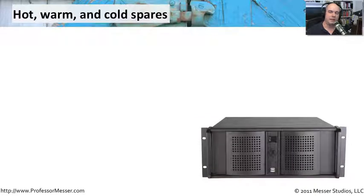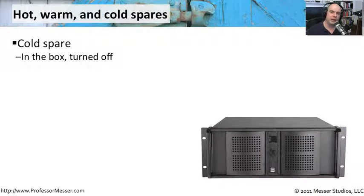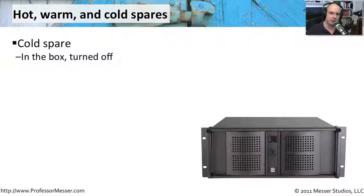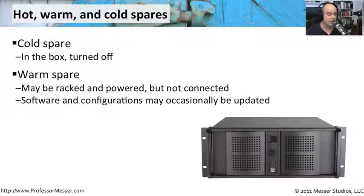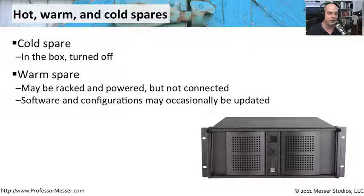If you're planning to have redundant systems, you may not run them all the same way. Cold spares mean you've purchased an additional server but keep it in a box in a storeroom. If a server fails, you pull the cold spare out, put it in the rack, and configure it from scratch. A warm spare is one you may have already placed in the rack, occasionally powered on, and updated with the latest software and configurations. If a problem occurs, you simply flip a switch or plug it in, and the warm spare is ready to go without additional configuration.